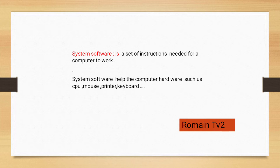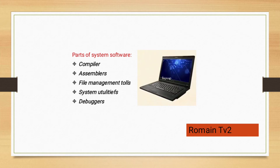System software takes the computer hardware such as CPU, mouse, printer, and keyboard to interact with the user. Parts of system software include compiler, assembler, file manager tools, system utilities, and debugger.